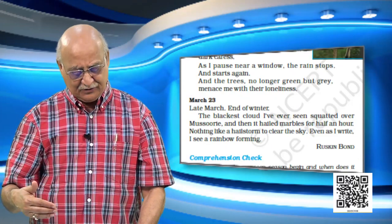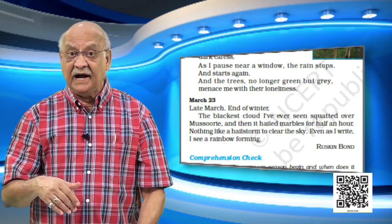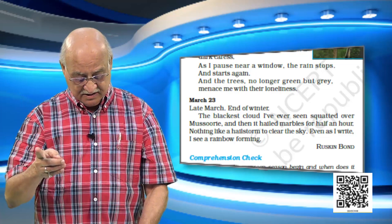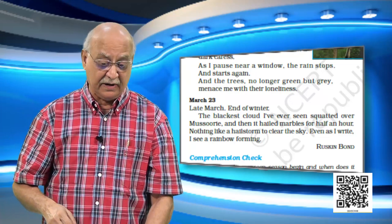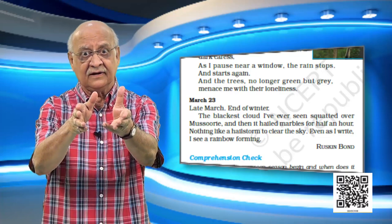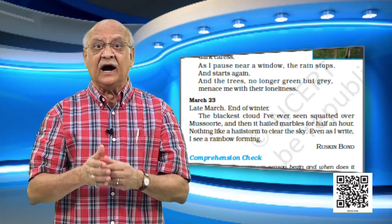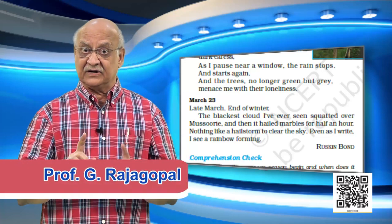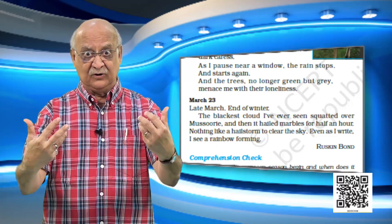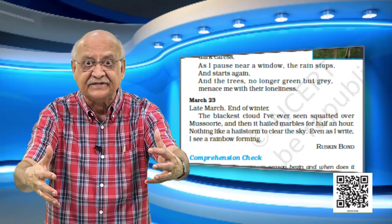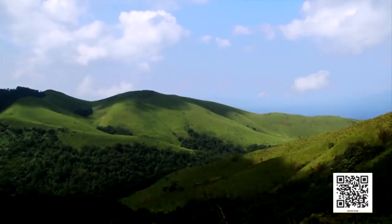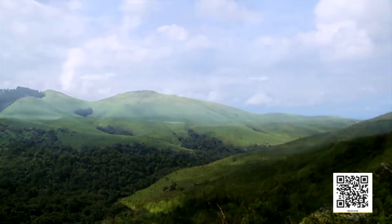As I pause near a window, the rain stops and starts again. And the trees — no longer green but grey — menace me with their loneliness. And what is menace? Threaten. So when the rain starts again and I look out, I see the trees. They were green a little while ago but now they are grey in the rain. They look at me as if to say, 'I am going to attack you and make you feel more lonely.' Let us now move on to part two and see the beauty of nature Ruskin Bond has given us.